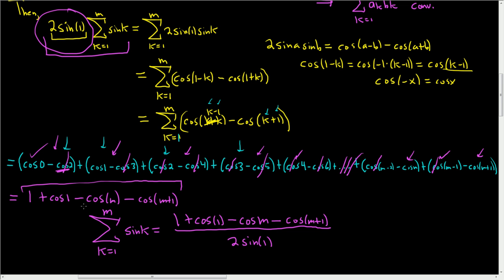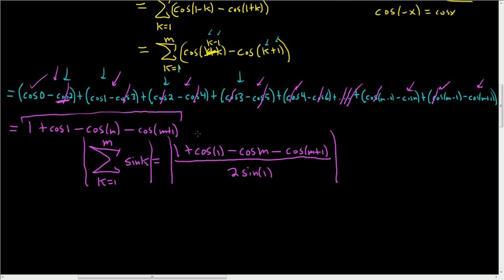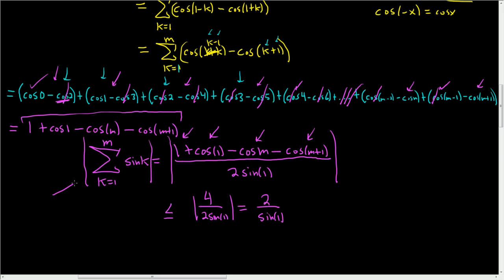Taking the absolute value of both sides and using the triangle inequality to find a bound: the biggest each of the four terms in the numerator can be is 1. So the numerator is at most 4, and the expression is less than or equal to 4 / (2 sin(1)) = 2 / sin(1). Since sin(1) is a positive number, we've found a bound.